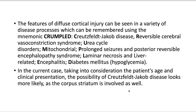The features of diffuse cortical injury can be seen in a variety of disease processes, which can be remembered using the mnemonic CRUMPLED: Creutzfeldt-Jakob disease, Reversible cerebral vasoconstriction syndrome, Urea cycle disorders, Mitochondrial disease, Prolonged seizures and Posterior reversible encephalopathy syndrome, Laminar necrosis and Liver-related encephalitis, and Diabetes mellitus with hypoglycemia.